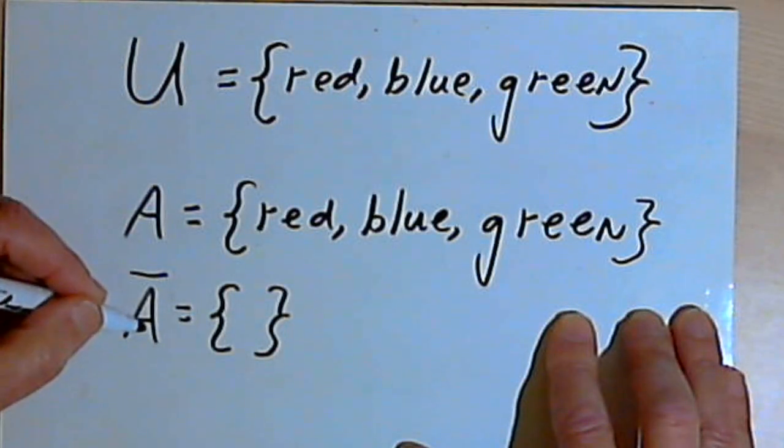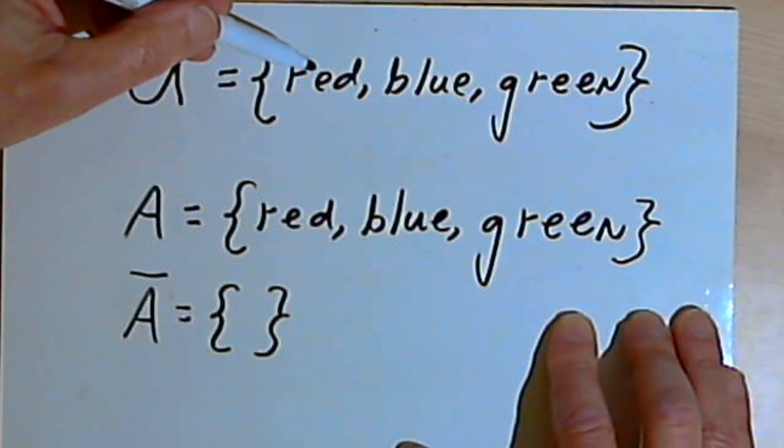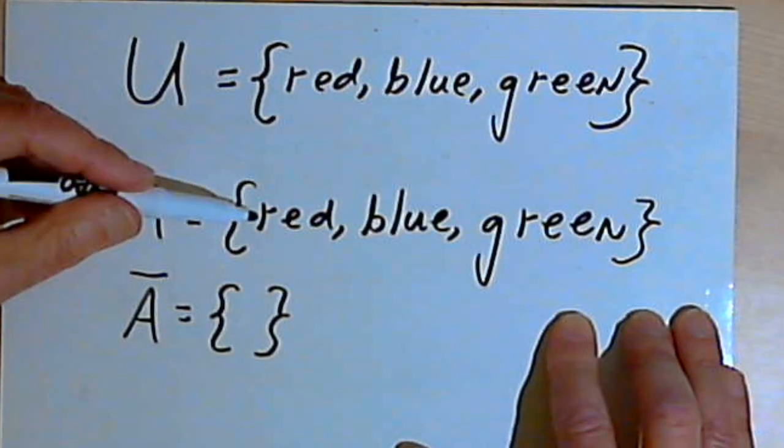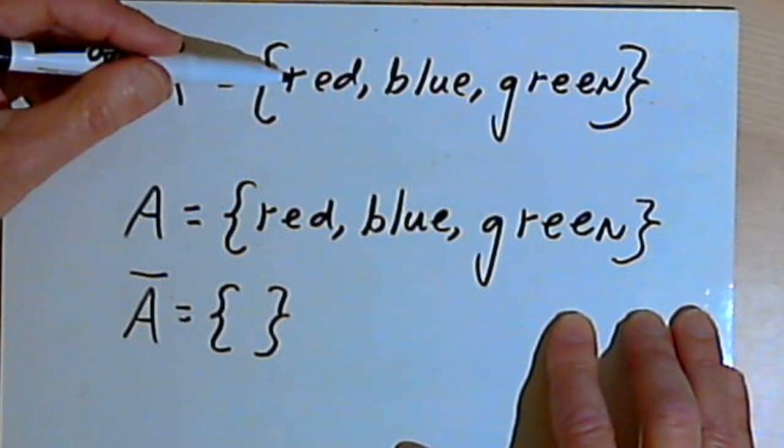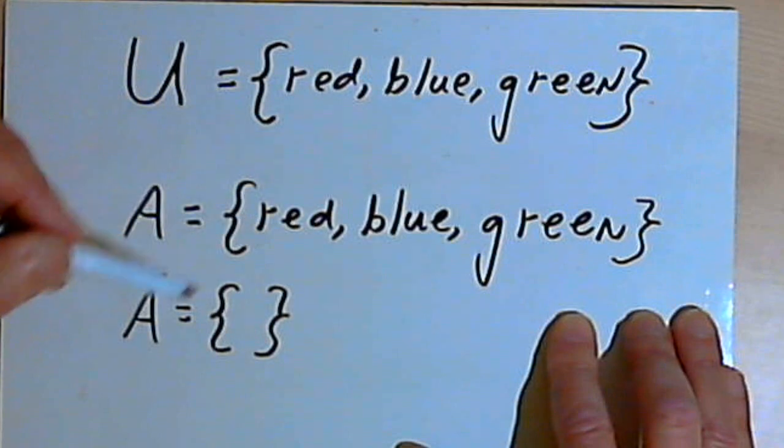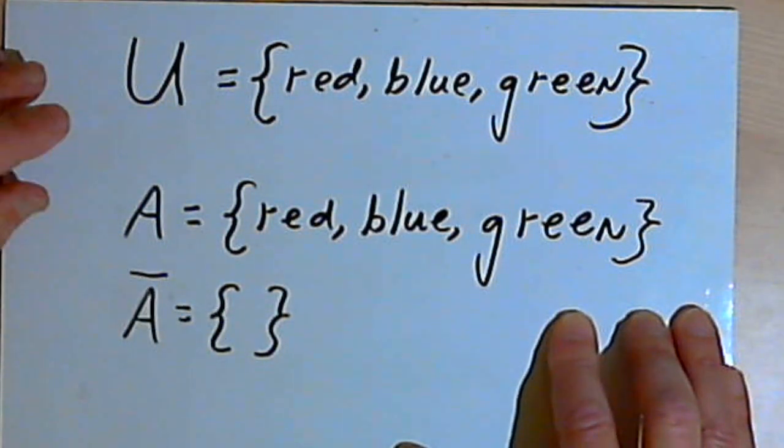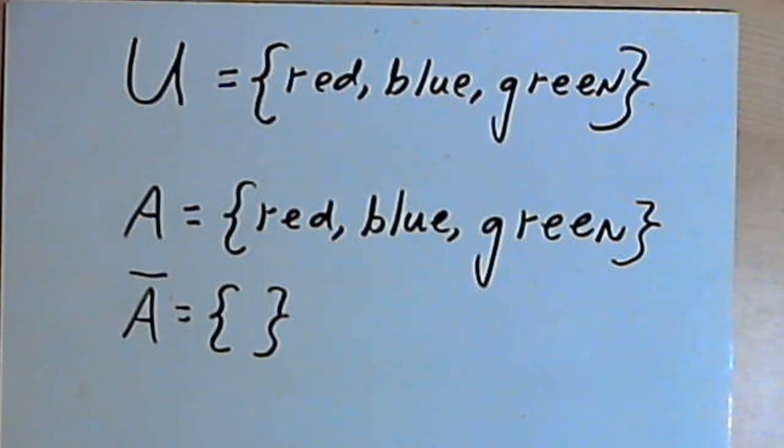So the complement of A is all of the colors, all the elements, in the universal set that are not in set A. But since set A is exactly the same as the universal set, there's nothing in the universal set which is not in set A, the complement of A is going to be an empty set. So that's basically what universal sets and complements of sets are about. Take care. I'll see you next time.